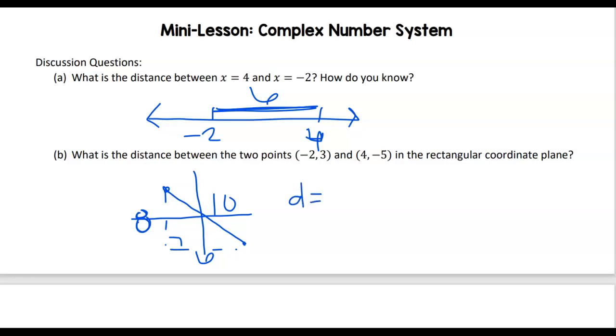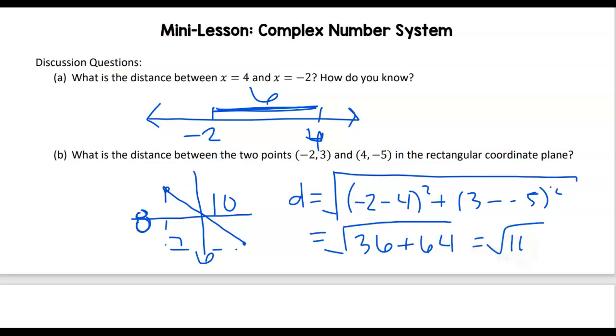Or we could use the distance formula and do the difference of my x's squared, the difference of my y's squared, and then take the square root of that. And we end up getting the square root of 36 plus 64, which is the square root of 100, which is 10.